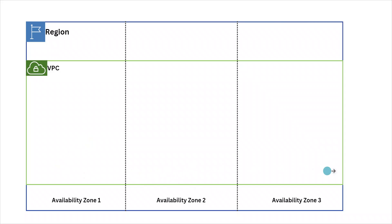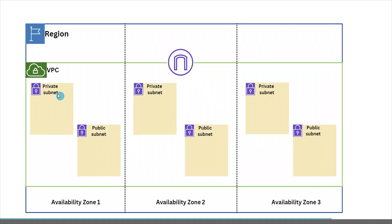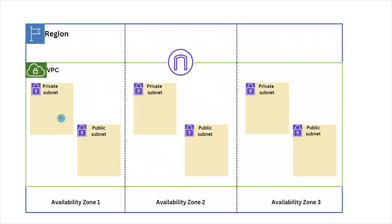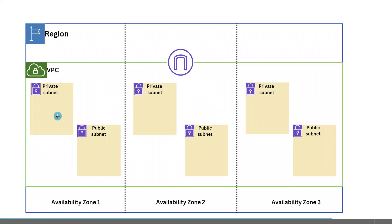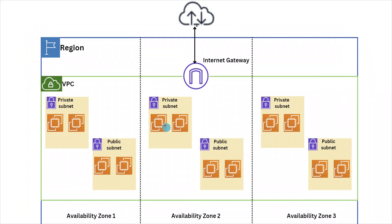The VPC is limited to a particular region but can span across availability zones. Inside the VPC we can have private subnets and public subnets. The subnets are limited to a particular availability zone — a subnet cannot span across two availability zones. In each availability zone we can have a private subnet and a public subnet, and there is one internet gateway for the entire VPC.